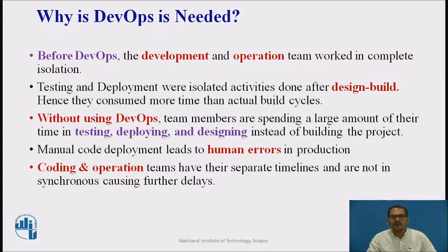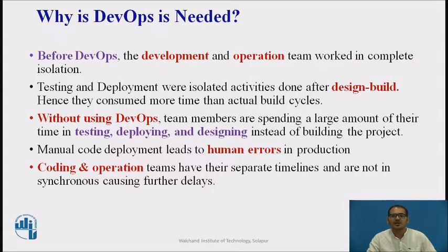Without using DevOps, team members spend a large amount of their time in testing, deploying, and designing instead of building the project. Manual code deployment leads to human errors in production. Coding and operation teams have their separate timelines and are not in sync, causing further delays. As per the Forrester consulting study, only 17% of teams can deliver software fast enough.